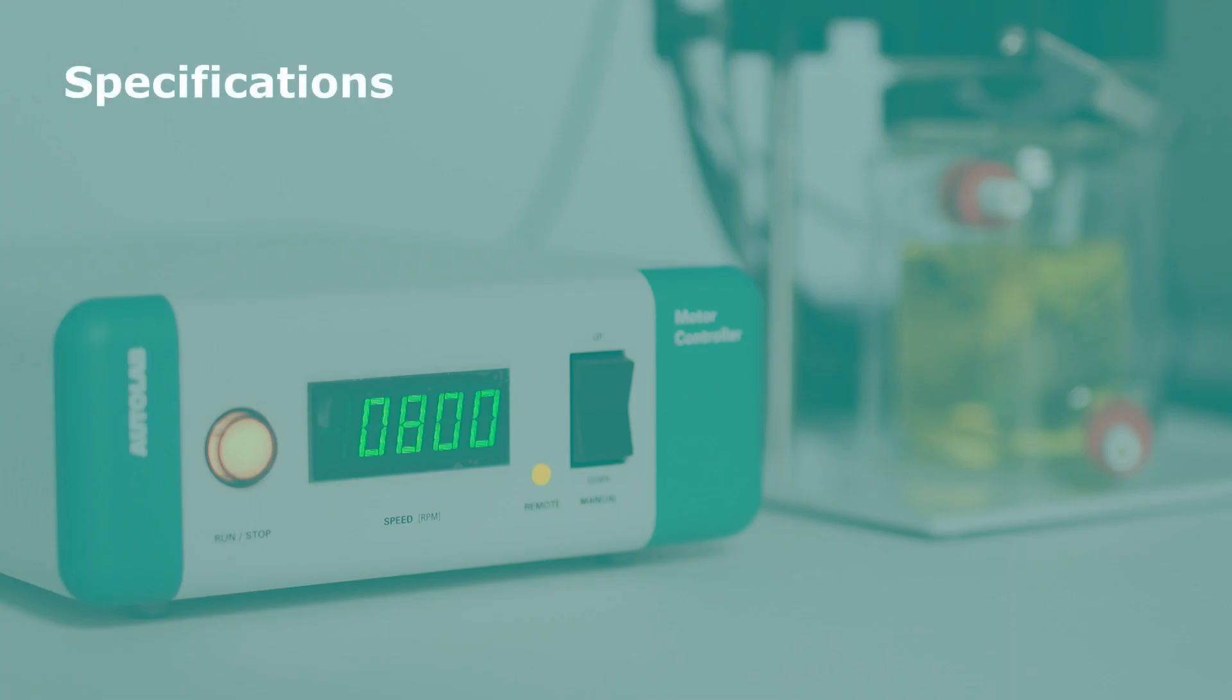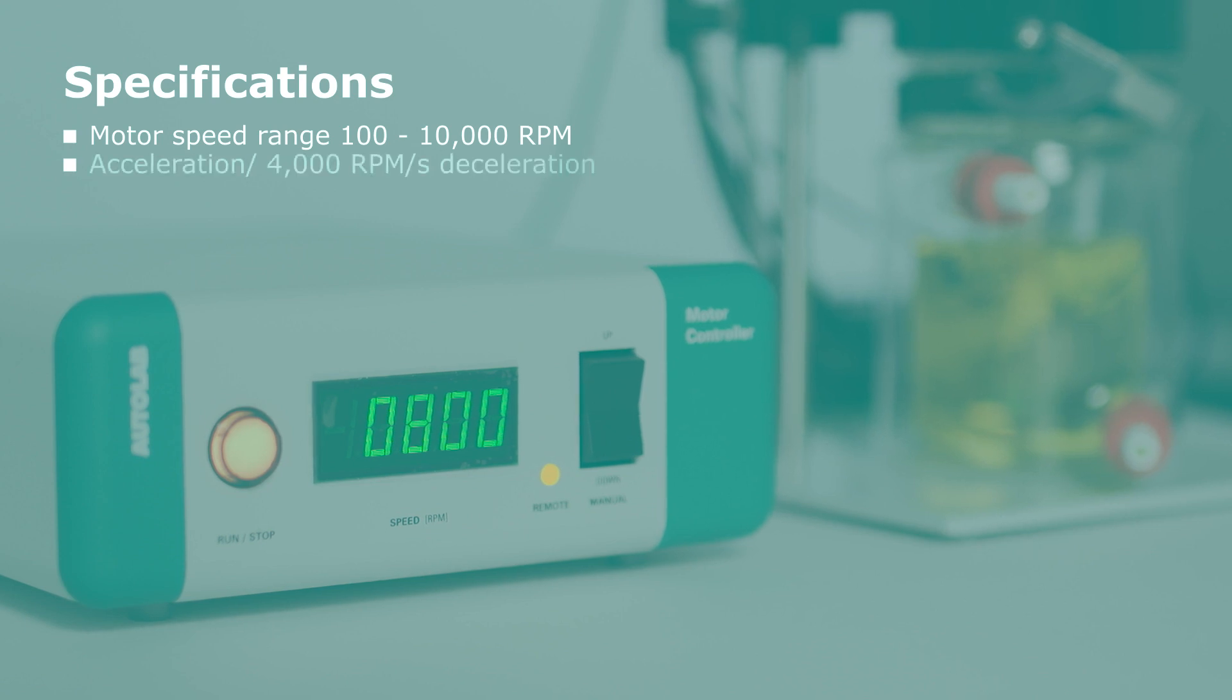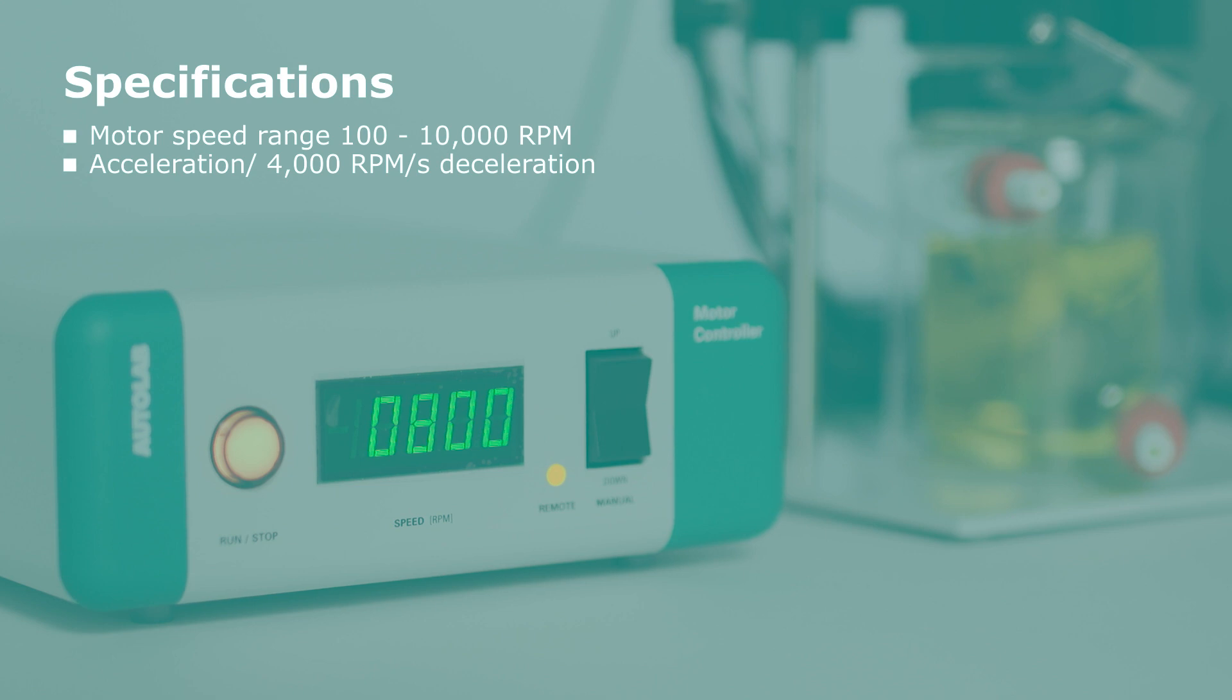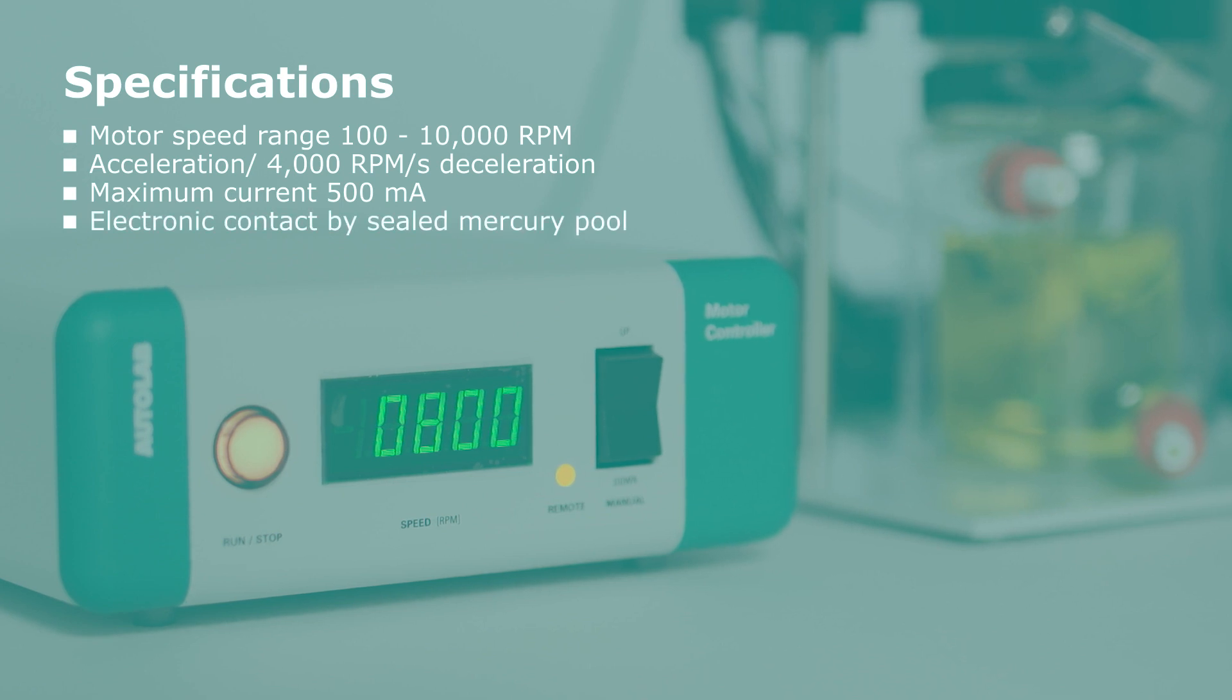The Metrohm Autolab rotating disk electrode with a low noise mercury contact facilitates a smooth current signal. The main specifications of the Metrohm rotating disk electrode are the motor speed range from 100 rpm to 10,000 rpm, the acceleration and deceleration is 4000 rpm per second, the maximum current goes up to 500 mA and the electronic contact is by sealed mercury pool.